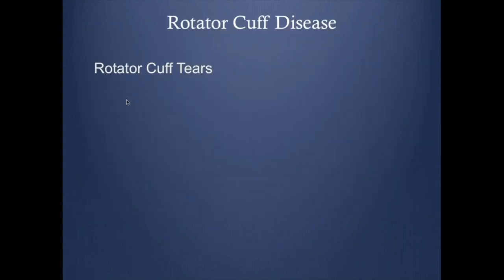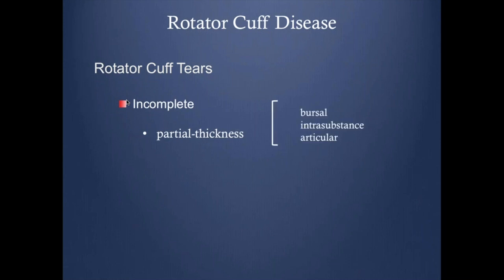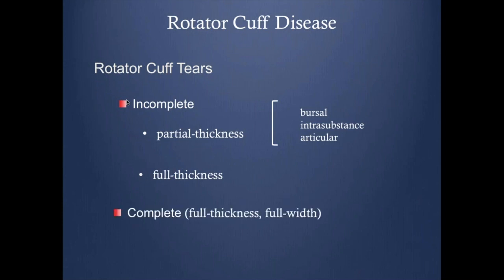Let's go through the spectrum of rotator cuff tear. It could be incomplete — and incomplete could be partial thickness, meaning only part of the thickness of the tendon is involved. This could be bursal, intrasubstance, or articular surface. It could be a full thickness tear, meaning the tear extends from one surface to another, but not necessarily the whole tendon. Complete means the whole tendon is torn and usually retracted — full thickness and full width. And massive rotator cuff is when more than two tendons are torn.